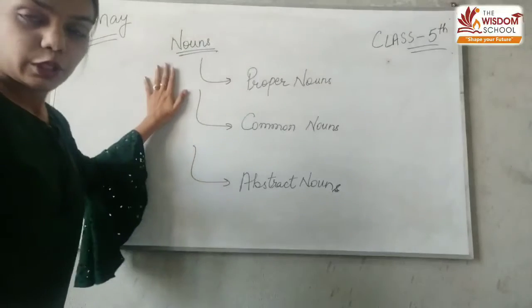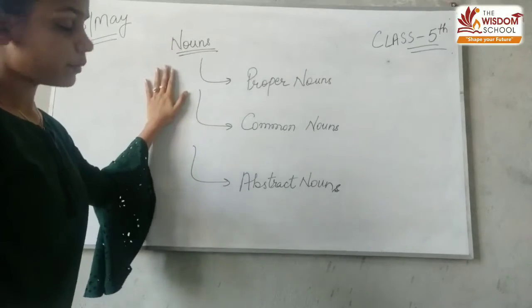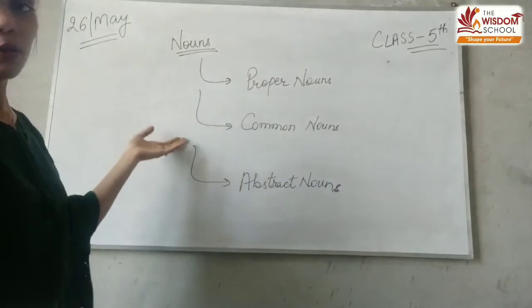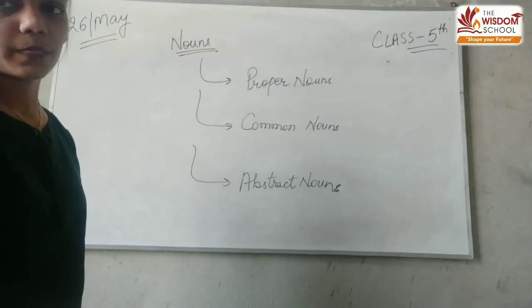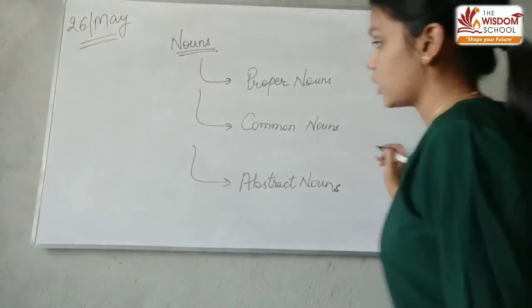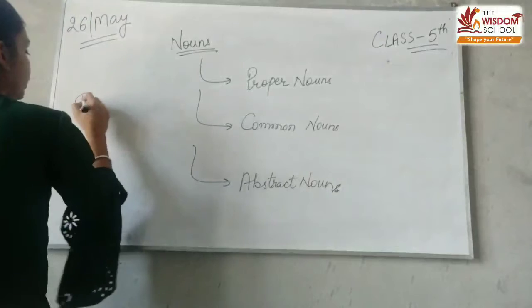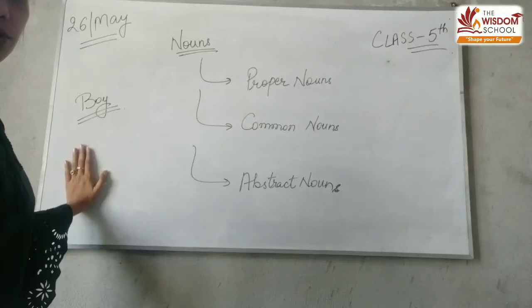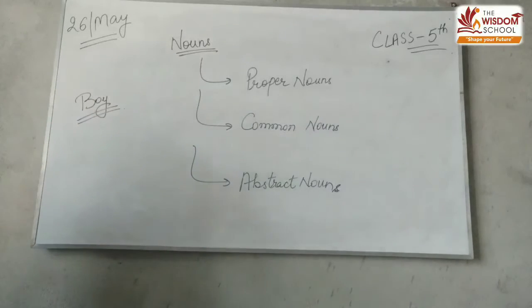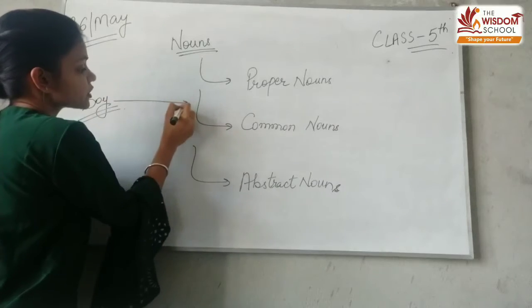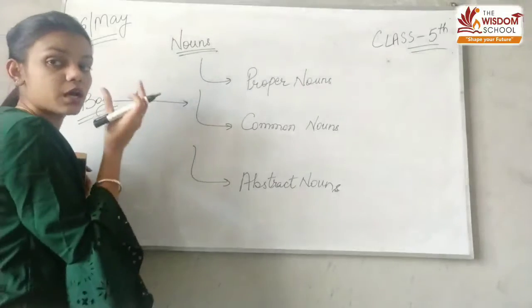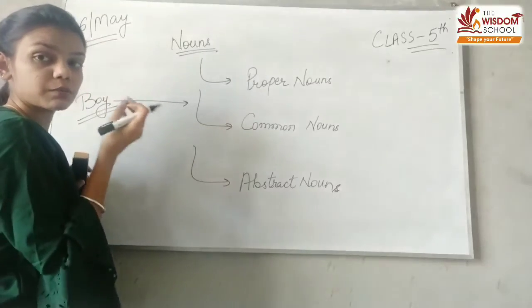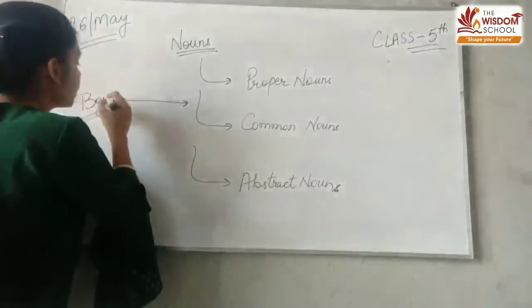Ab dekho, ek brief deti hoon. Explanation with examples next class mein padhenge. Ek brief kya de rahi hoon - proper noun, common noun, or abstract noun hote kya hain. Agar main baat karti hoon 'boy' ki, toh kya aapko pata hai ki main koon se boy ki baat kar rahi hoon? No, you don't. Jabhi main koi special name na bataaon, special person, special animal, particular person, particular place ya thing ka na bataoon, toh woh common hota hai.